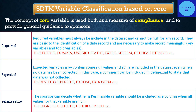Required variables must always be included in the dataset and cannot be null for any record. They are fundamental to the identification of a data record and are necessary to make records meaningful — generally the key variables and topic variables. Examples include STUDYID, DOMAIN, USUBJID, CMTRT, EXTRT, AETERM, DSTERM, and LBTESTCD.